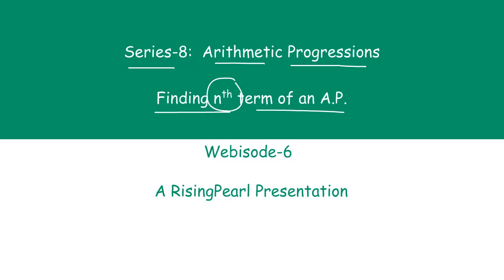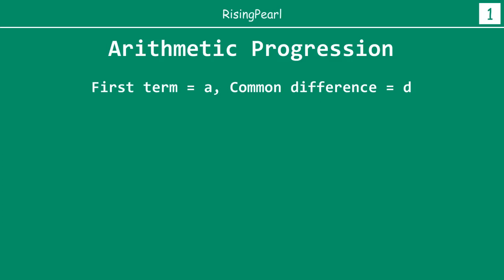So today we are going to talk about what is the nth term of an arithmetic progression. Let's say that we have an arithmetic progression that starts with A — the first term is A and the common difference is D. We write the first term A1 equals A, where the subscript represents the number of the term.